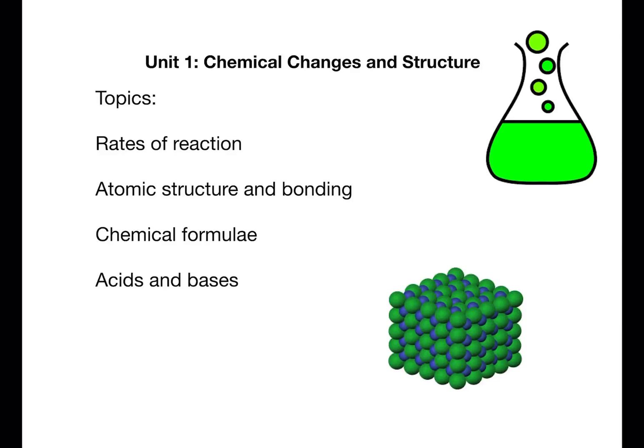Atomic Structure and Bonding looks at the structure of atoms and how this leads to the structure and properties of different substances during bonding. Chemical formulae introduces the standard rules and processes used by chemists to represent substances using chemical formulae in addition to the related calculations that are required to carry out reactions.